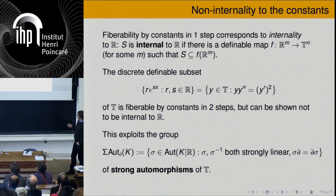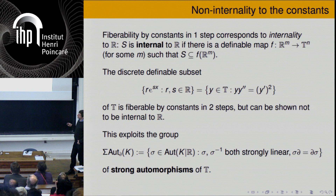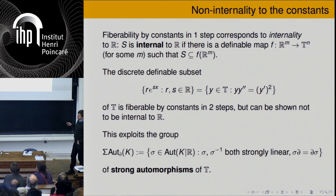Here is such an example. If you look at the differential equation y' = y, the solutions in T look like real multiples of e^{sx} — these are all the exponentials. This set is fiberable by constants in two steps: you take the logarithmic derivative of such a thing, which gives you a real number, and the fibers are also given by real numbers. But one can show it's not internal to the reals. To show this rigorously, you exploit the group of strong automorphisms of T: if you have any countable subset of T, you can find an automorphism fixing that countable set and moving these elements.